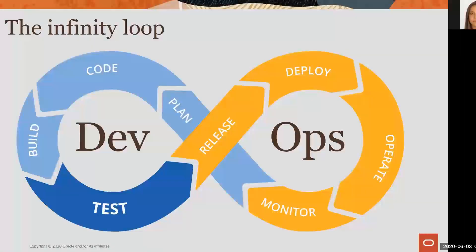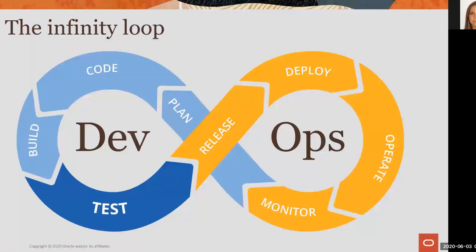Let's start with this image. What companies usually want to achieve is to deliver fast and safe their products to their end users. In order to do it, they need to have a process in place. What we see here is an infinite loop because companies don't deploy their products one time — they constantly develop and deploy new code and new functionality.